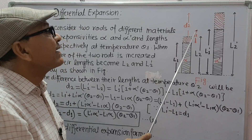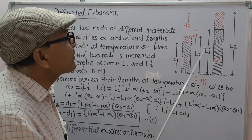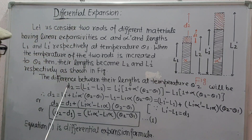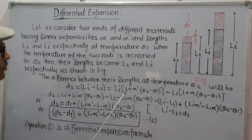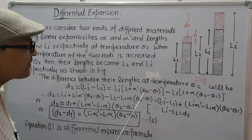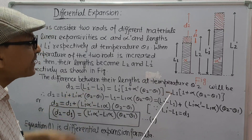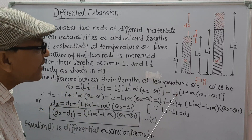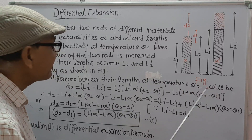The difference of their final lengths, D2, will be equal to L2 dash minus L2. L2 dash can be written as L1 dash into (1 plus alpha dash times (theta 2 minus theta 1)), and L2 may be written as L1 into (1 plus alpha times (theta 2 minus theta 1)).